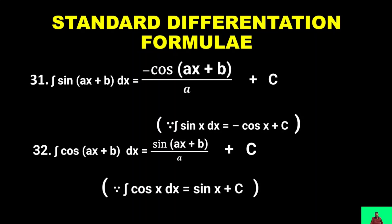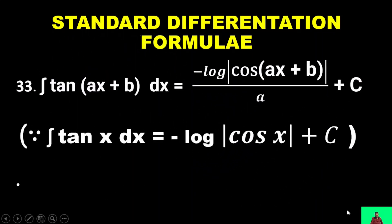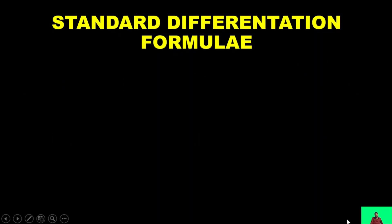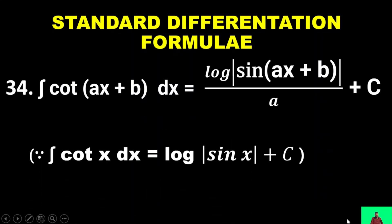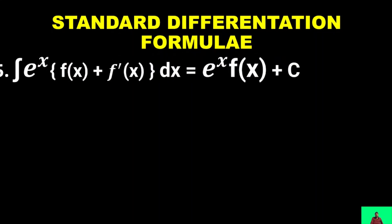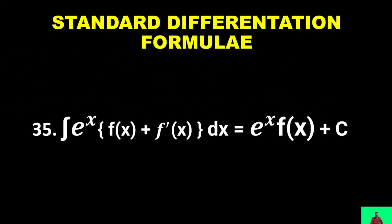∫cos(ax + b) dx = sin(ax + b)/a + C, since ∫cos x dx = sin x + C. ∫tan(ax + b) dx = −log|cos(ax + b)|/a + C. ∫cot(ax + b) dx = log|sin(ax + b)|/a + C.